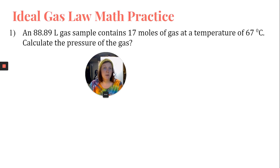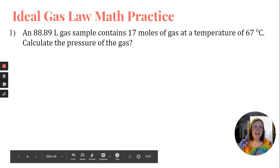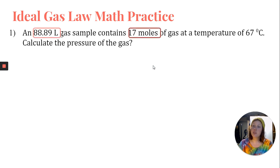If we take a look at number two, it says an 88.89 liter gas sample contains 17 moles of gas at a temperature of 67 degrees Celsius. Calculate the pressure of the gas. Now keep in mind, do we have two sets of variables? Do we have two volumes, two numbers of moles, two temperatures, two pressures? No. And because we don't, we're not observing a change in the system. That means we're not going to be using the combined gas law. Instead, we're going to be using PVnRT, ideal gas law.